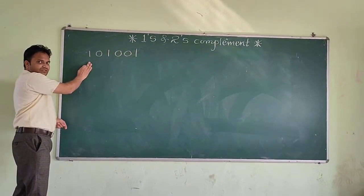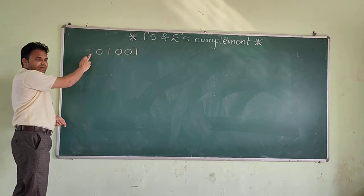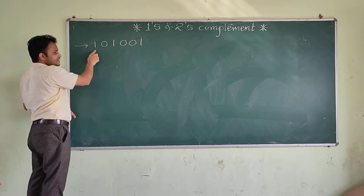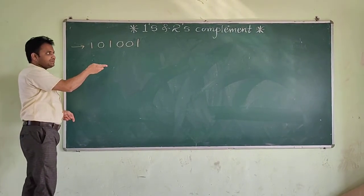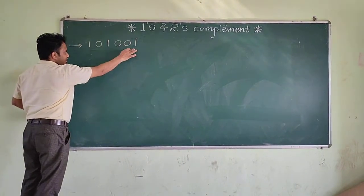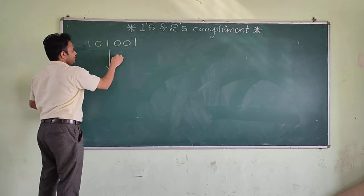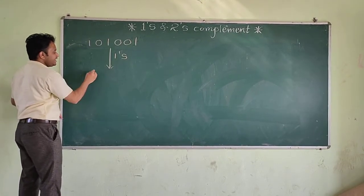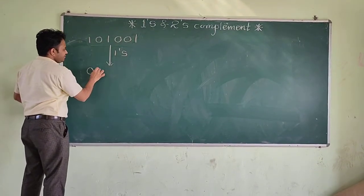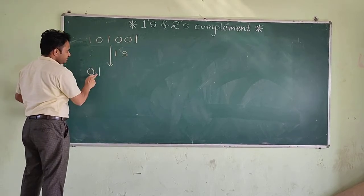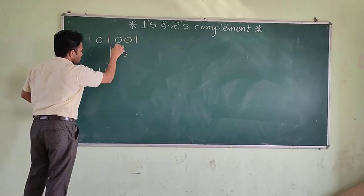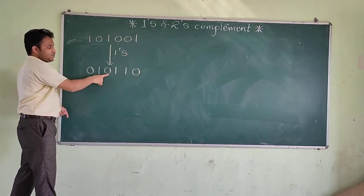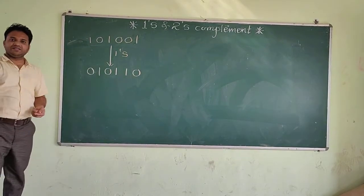The procedure is very simple. To find the 1s complement, you just have to replace 1 by 0 and 0 by 1. So for the given number 101001, this 1 will be 0, 0 will be 1, and similarly 0110. The answer is 010110. It is very simple.